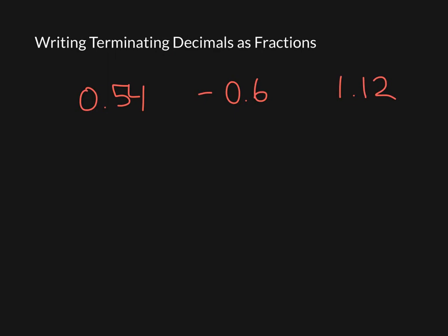So if I write these as changing them from terminating decimals to fractions, what I'm going to do is just count and see how many spaces over I have here. So if I look here, this would be 54 hundredths. So I'm just going to put 54 over 100. Then I'm going to simplify that. That's going to end up being 27 over 50.